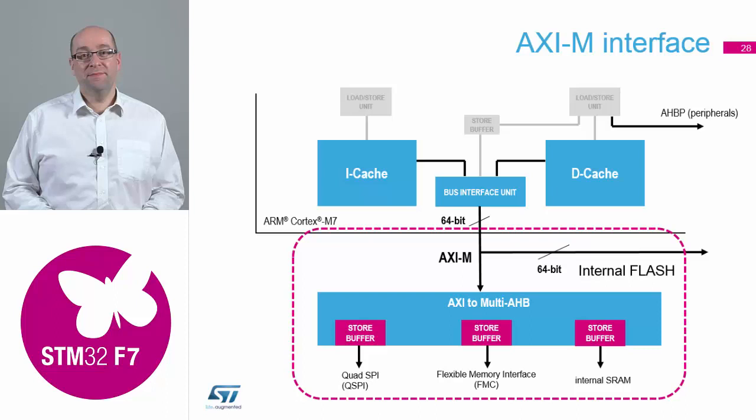The Axibus is 64 bits, and this is the interface between our existing multi-AHB bus matrix that we had on the F4 — so that's still there with all the connections. It provides a buffer between the slower external RAMs and the core itself.